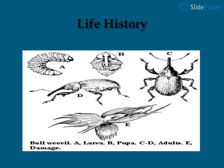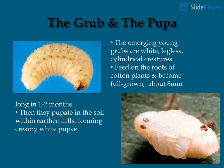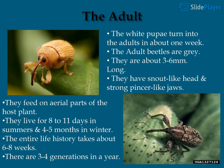Life history of the Cotton Gray Weevil: the female lays ovoid, light yellow eggs in the soil, which hatch in 3 to 5 days. The emerging young grubs are white, legless, cylindrical creatures that feed on the roots of cotton plants and become full-grown at about 8 millimeters in 1 to 2 months. They then pupate in the soil within earthen cells, forming creamy white pupae.